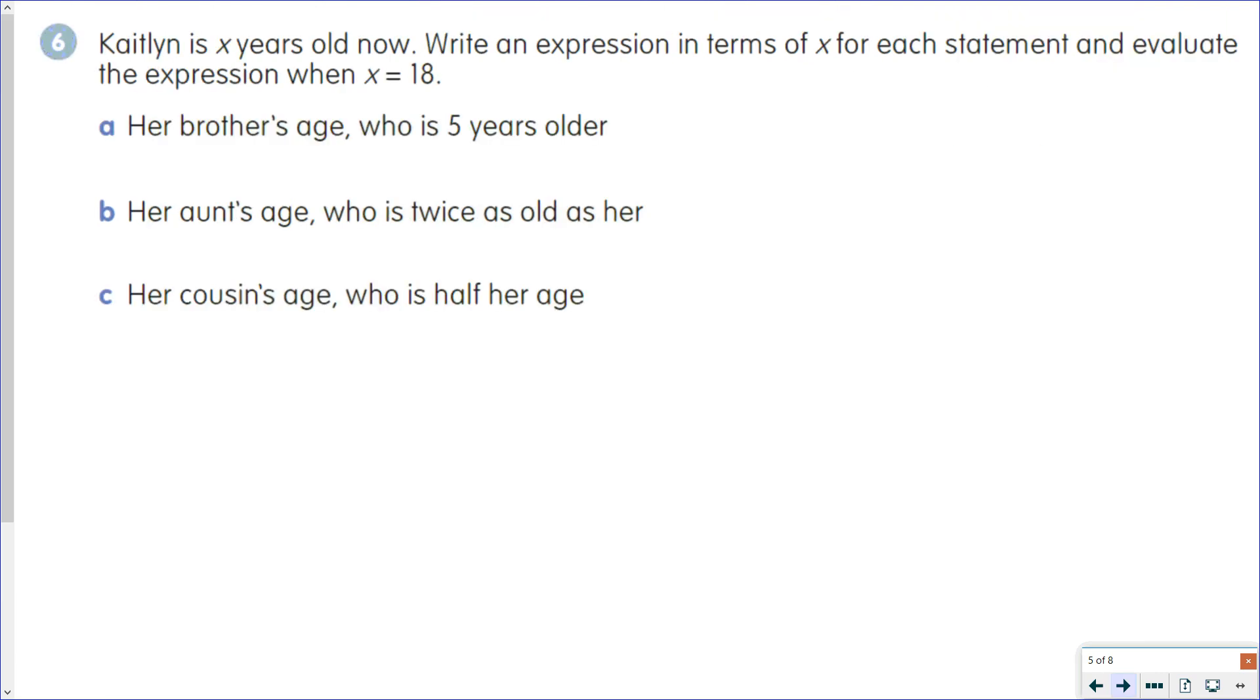Caitlin is x years old now. Write an expression in terms of x for each statement and evaluate the expression when x equals 18. So her brother's age, who is 5 years older. So we do x plus 5. And so you'd have 18 plus 5, which makes her brother 23.